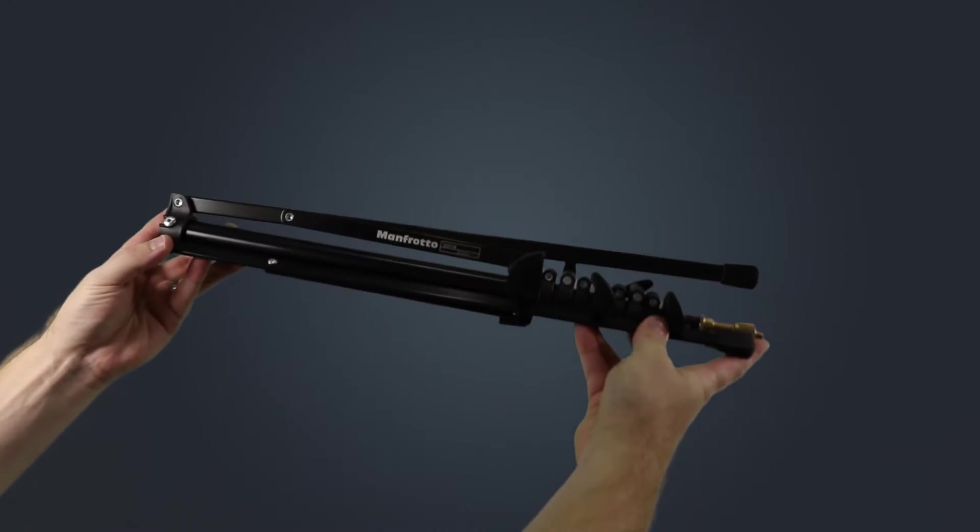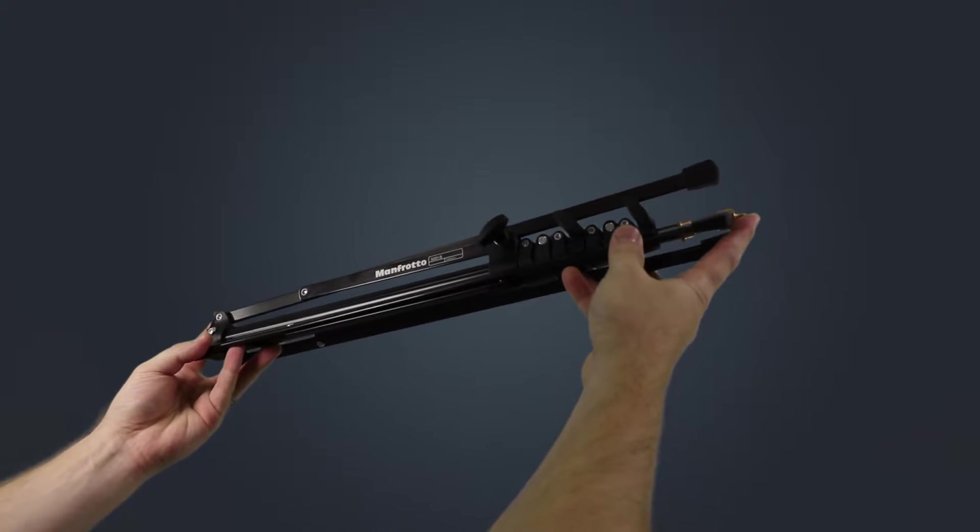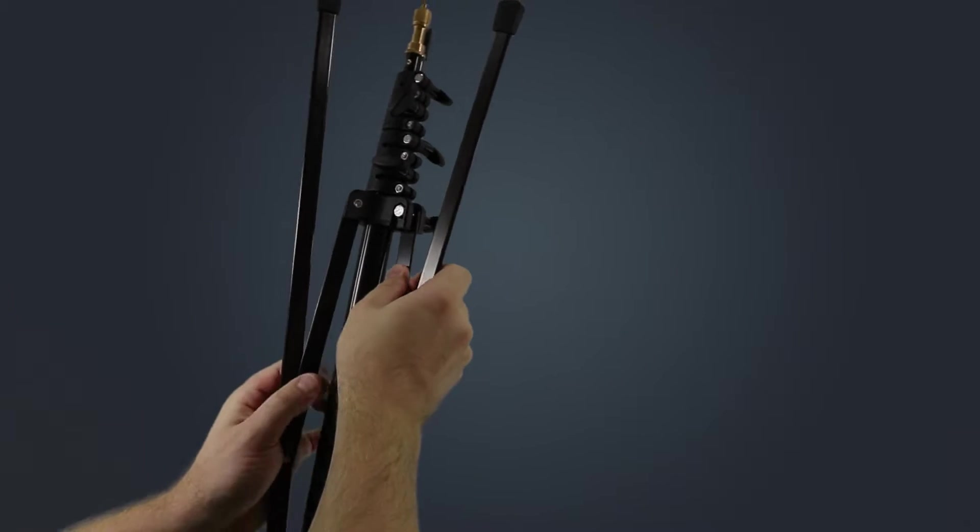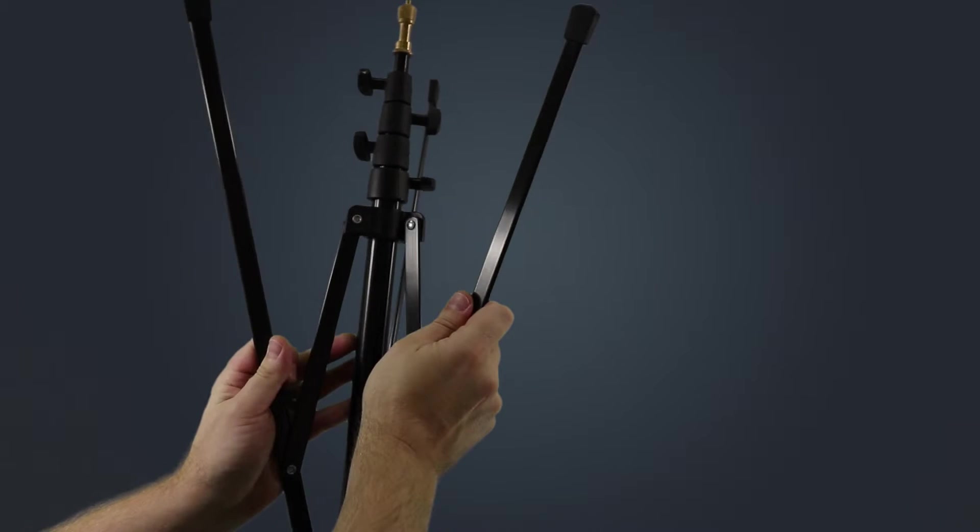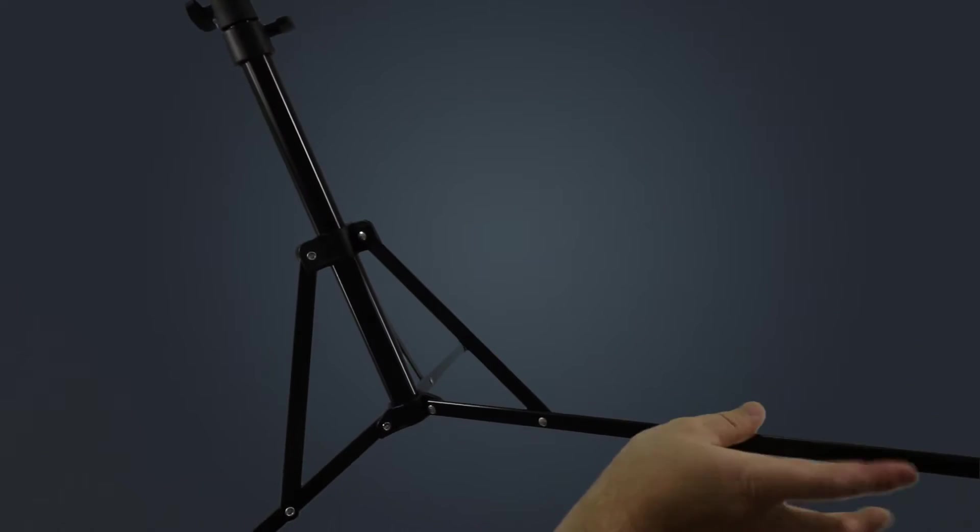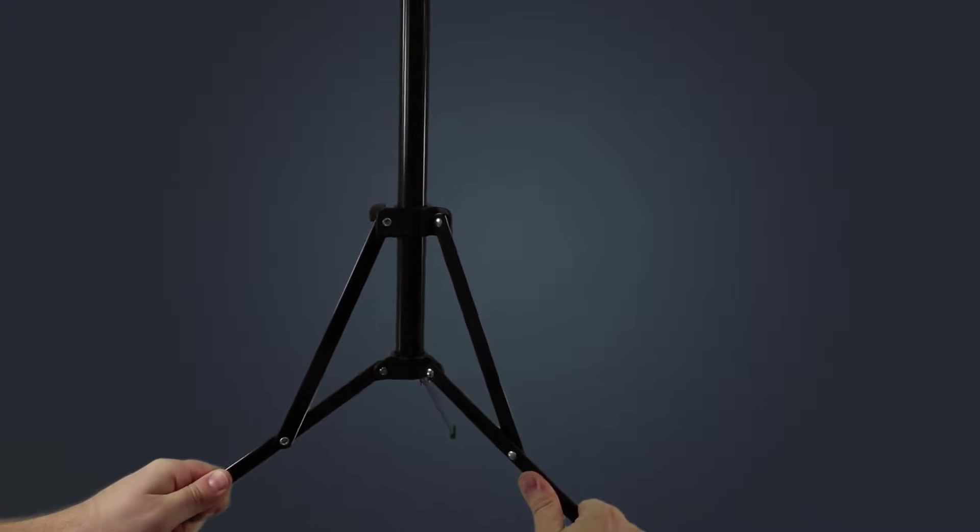Fully folded, the unit is a compact 18.9 inches in length. The legs can be adjusted to a maximum diameter of 39 inches to provide for a nice stable stance for up to 1.5 kilograms or roughly 3.3 pounds of gear deployed on the top of the unit. Five total segments make up the stand.